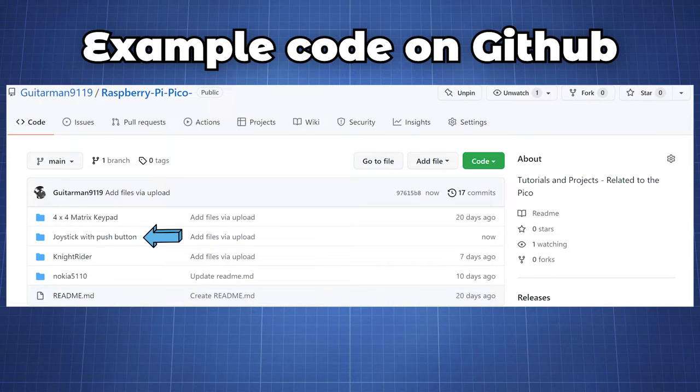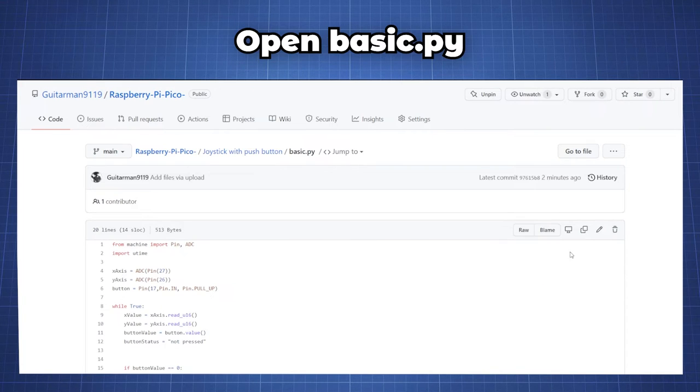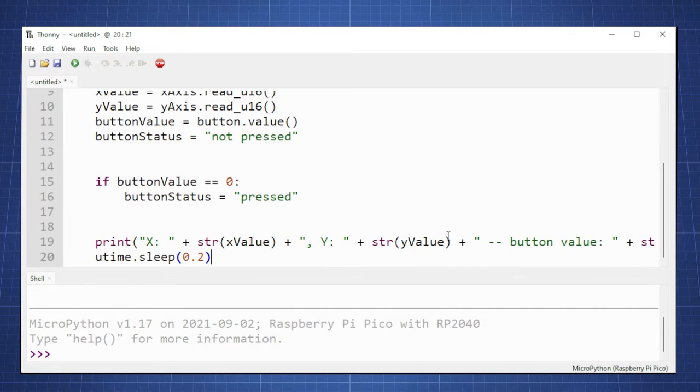The code for this example is available on my GitHub which you can find in the description down below. Open the file, copy all the code and then go to Thonny, create a new file and paste the code.